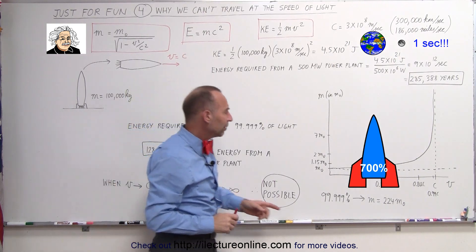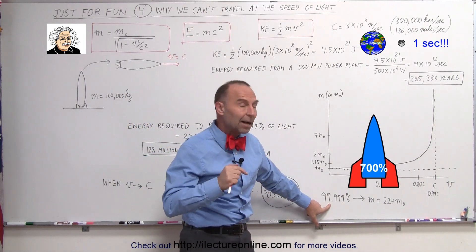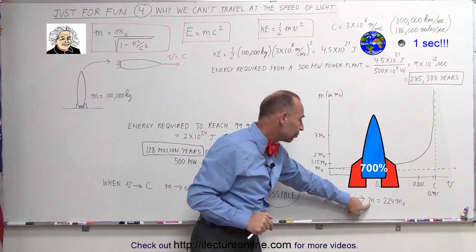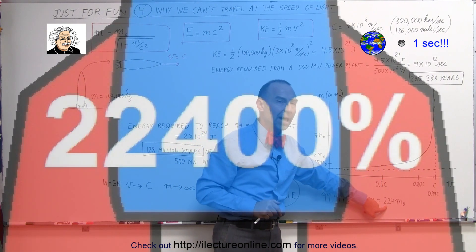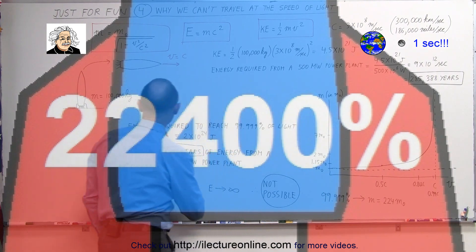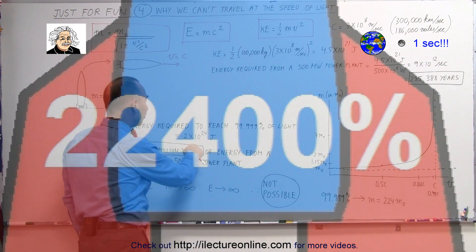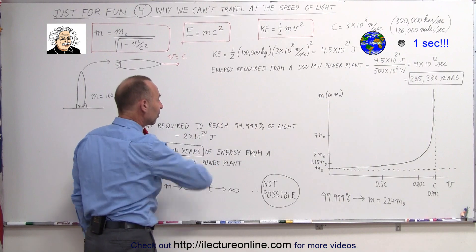Let's say that you want to travel at 99.999% of the speed of light. The mass would now be 224 times the original mass. The amount of energy you would need to travel that fast, at 99.999% of the speed of light...